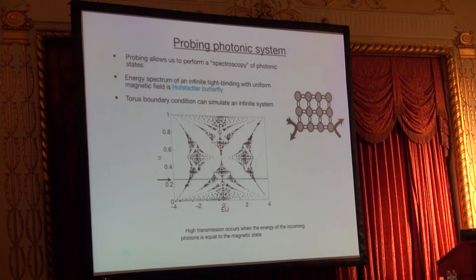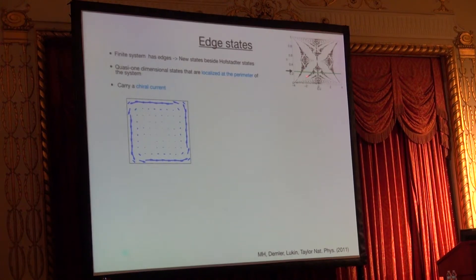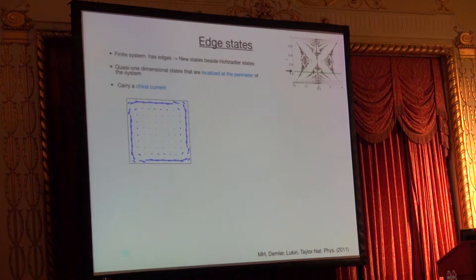What happens if we don't put the system on a torus — if it's just a square? Once the system is on a square, we realize there are states that appear in between these magnetic bands. Those are called edge states. If I look at these eigenstates and plot the probability density, I see that they carry a current around the edge of the system — that's why they're called edge states. They're chiral: some of them go one way, some go the opposite way, and the ones going opposite ways have different energies.